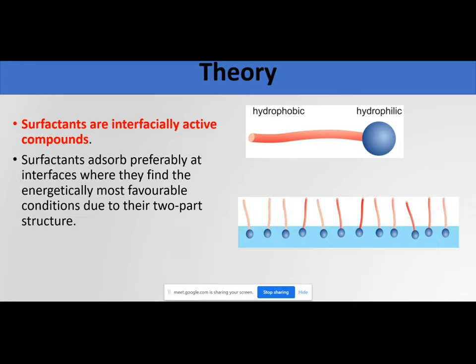If you look at figure number one, this is the figure of a surfactant molecule. A surfactant molecule has two ends: one is its hydrophobic tail — this red color tail is your hydrophobic tail, which is water-hating or oil-loving. This blue color head is your hydrophilic head, which is water-loving. That means in one molecule you have two different natures of ends — one is water-hating (the red tail, generally a carbon backbone structure) and one is water-loving, which directly interacts with polar solvents.